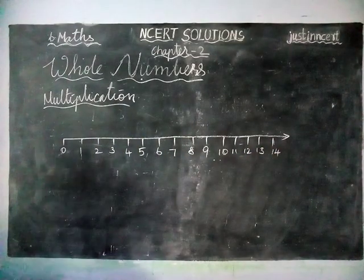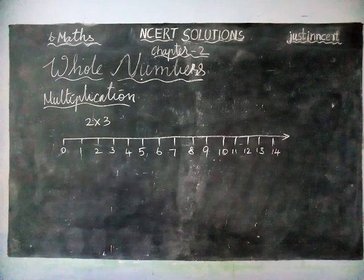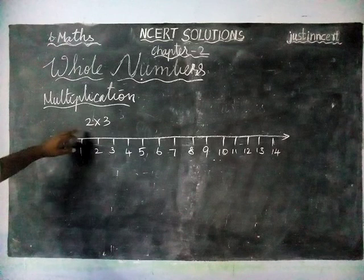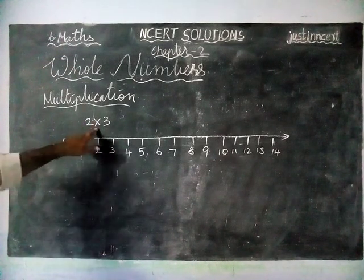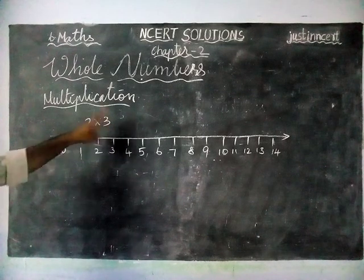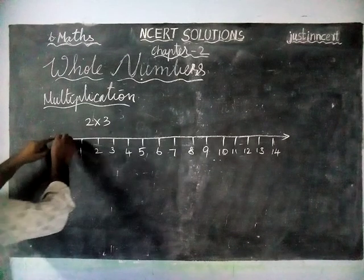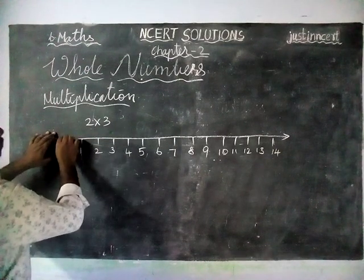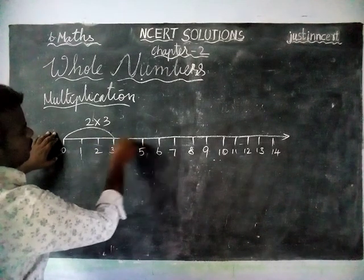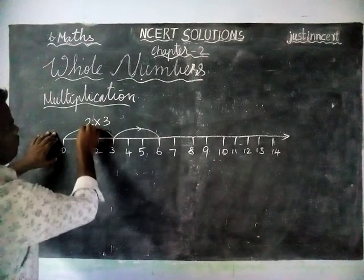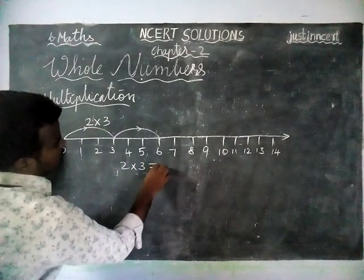We are going to multiply 2 into 3 on the number line, starting from 0. For 2 into 3, we jump 3 steps two times. First jump: from 0, we go 1, 2, 3. Second jump: 1, 2, 3. After two jumps of 3 steps, we reach number 6. So 2 into 3 is equal to 6.